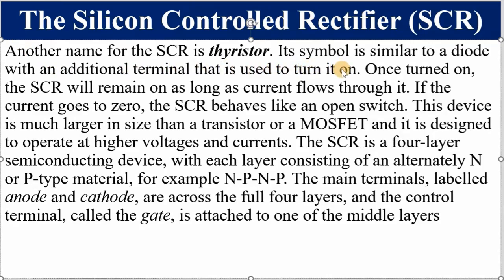Once the SCR is turned on, it will remain on as long as current is flowing through it. If the current is cut off, the SCR goes off. It is larger than a BJT or MOSFET and is designed to operate at high voltages and currents. It is a four-layer semiconductor device with alternating P-N-P-N or N-P-N-P layers. The anode and cathode terminals span the full four layers, and the gate is attached to one of the middle layers.